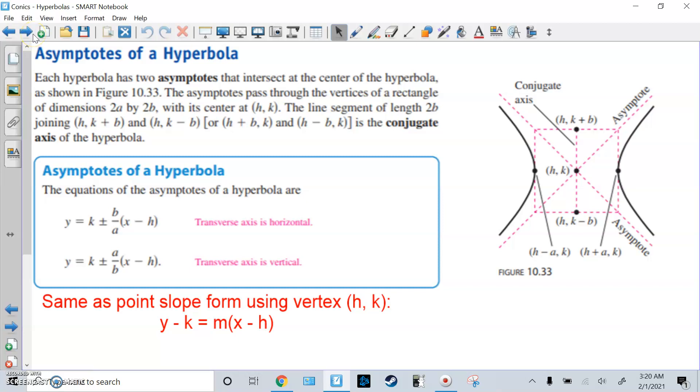We have asymptotes for hyperbola. It's these diagonal lines that the hyperbola will not really cross or intersect or touch. Each hyperbola has two asymptotes that intersect at the center of the hyperbola, as shown in this figure 10.33. The asymptotes pass through the vertices of a rectangle of dimensions 2a by 2b. Center again (h,k). The line segment of length 2b joining these two things is called the conjugate axis, instead of the transverse axis. So transverse goes through the foci and vertices. The conjugate does not.